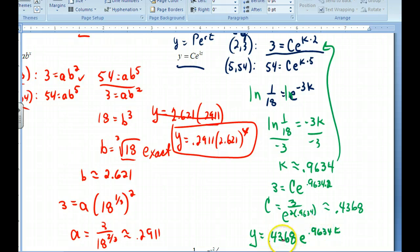So I'm going to write out this equation: y = 0.4368e^(0.9634t). This initial value should be the same as this initial value. After some checking, I think that I put 2 in here in my calculator instead of 3. This would also be 0.4368. So it's a nice way to check with both of the formulas.